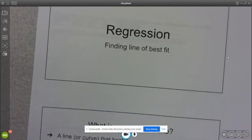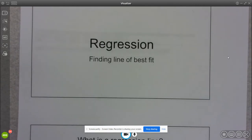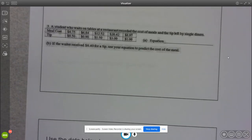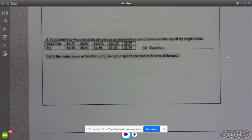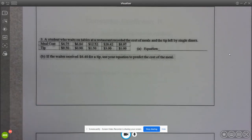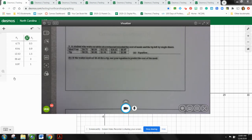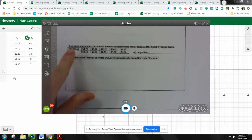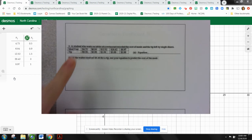So we're going to see how to do this with Desmos today. So this is our first example here. I already have my data in Desmos in a table. So go ahead and pause the video and put this meal cost in X and tip in Y.